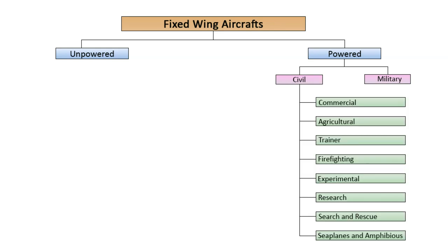Civil aircraft is decomposed into different groups, namely: commercial transport, agriculture, training, firefighting, experimental, research, search and rescue, as well as sea and amphibious planes.